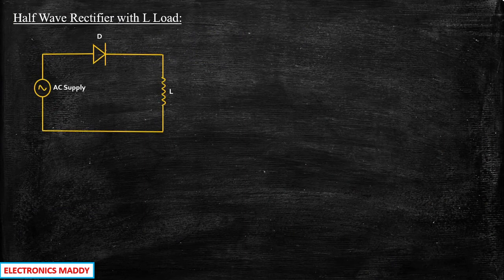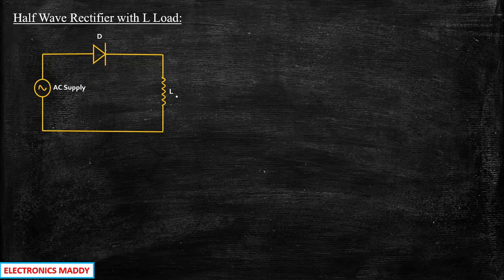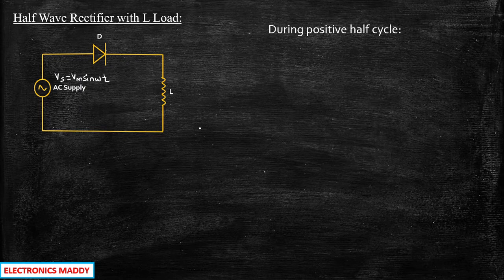This is the circuit diagram of a half-wave rectifier connected to an inductive load, that is L-load. Vs is basically given by Vm sin(ωt). In order to understand the circuit in a much better way, let us consider the positive half-cycle first.